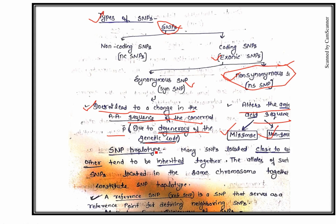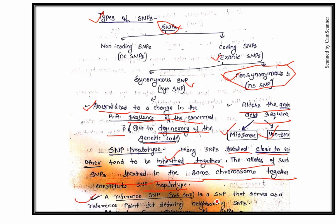An important term in molecular genetics is haplotype. Haplotype means something which is inherited together. In the context of SNPs, many SNPs located close to each other tend to be inherited together. The alleles of such SNPs located on the same chromosome together constitute the SNP haplotype. A reference SNP — or REF SNP — is a SNP that serves as a reference point for defining every other SNP.